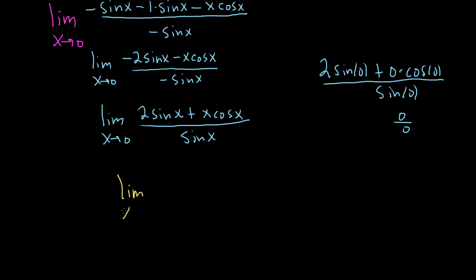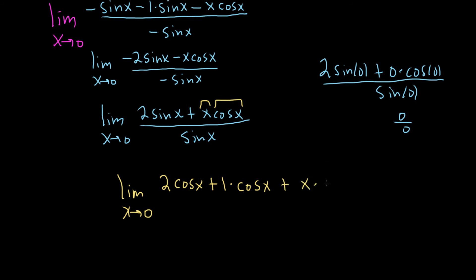So limit as x approaches 0 — take the derivative again. The derivative of 2 sine x is 2 cosine x. Using the product rule on x cosine x: derivative of the first is 1 times cosine x, plus x times the derivative of cosine which is negative sine x. On the bottom, we have the derivative of sine, which is cosine.